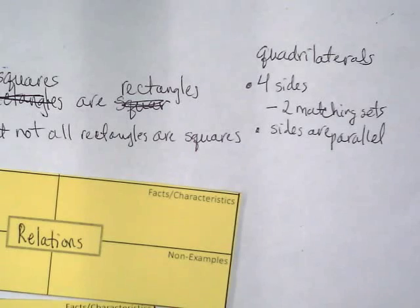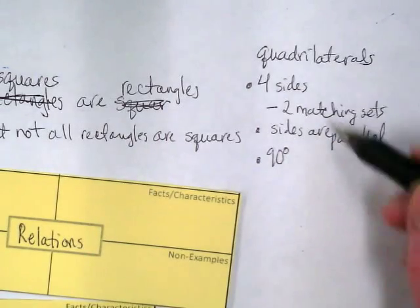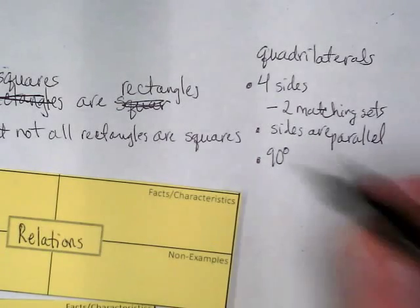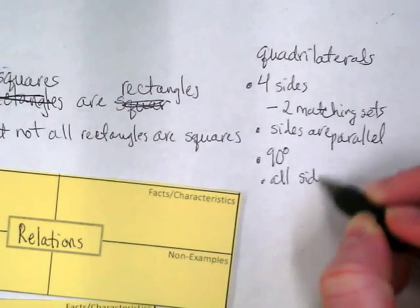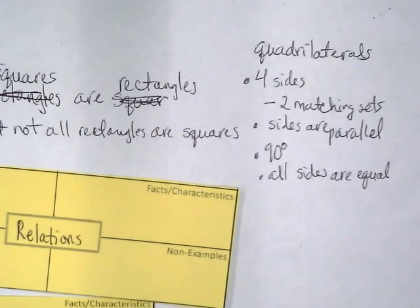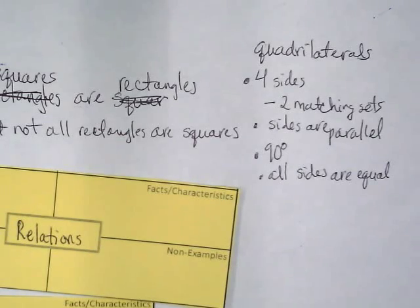What else is true? This is the really critical part. 90-degree angles. If we did not have 90-degree angles, we couldn't have parallel sides and we wouldn't have matching sides. What's special about a square? It only has one more thing — equal sides. That means it's an equilateral quadrilateral, which we just call a square.